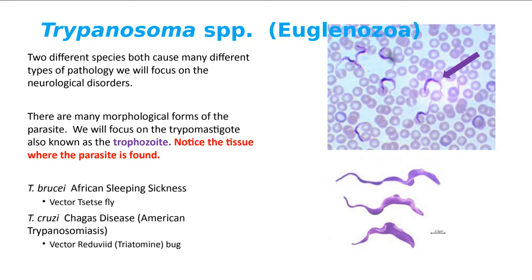African sleeping sickness gets into the blood and causes a neurological disease which basically shuts down the nervous system, causing people to become unconscious and then pass away — that's why it's called African sleeping sickness. Trypanosoma cruzi gets into the blood and then causes cardiomyopathy, attacking the heart, or it causes intestinal problems.